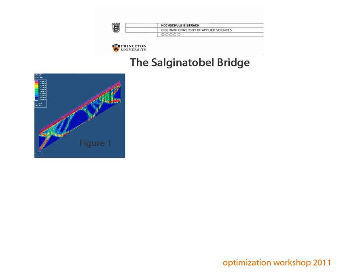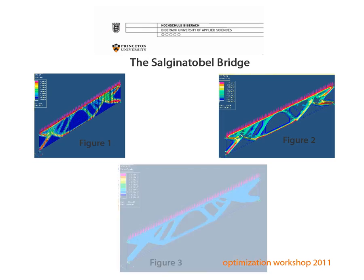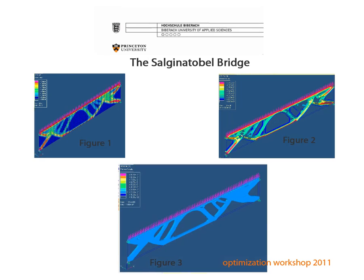Note that the corner edges are fixed. Figure 2 shows the iso-surface plot of the densities, which is legend-based. Figure 3 shows the iso-surface plot of the surface of equal densities, which is value-based on densities between 0.3 and 1.